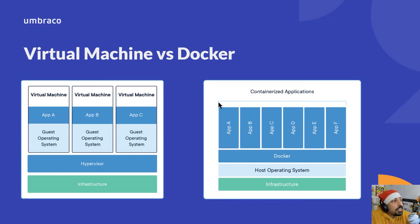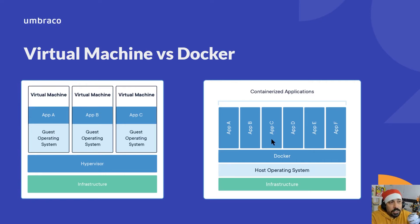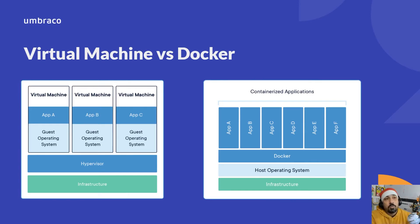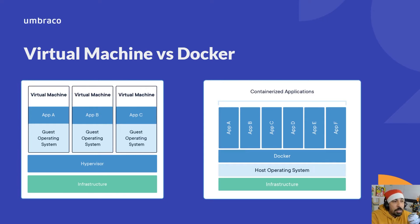Docker works slightly differently. On a traditional virtual machine environment, each VM has to have its own operating system — that isn't the case with Docker. Each application effectively uses the Docker infrastructure to use the operating system of the host machine, so it doesn't need to replicate that. On a Windows machine, through the use of the Windows Subsystem for Linux, you can host both Windows and Linux Docker containers. But you can't host a Windows container on a Linux operating system because Linux doesn't have those Windows API calls natively available. You can only host Linux containers on Linux.